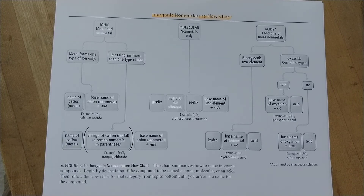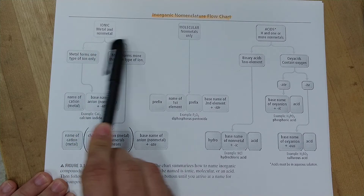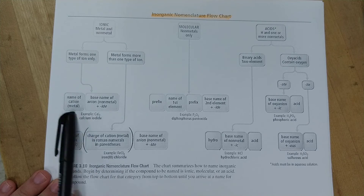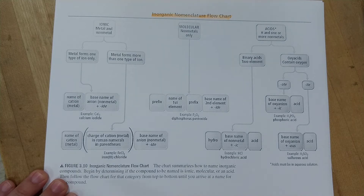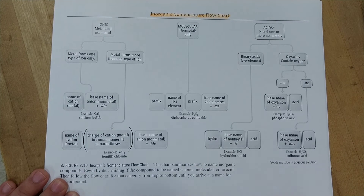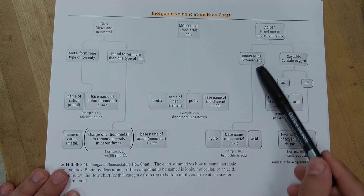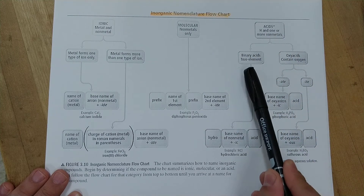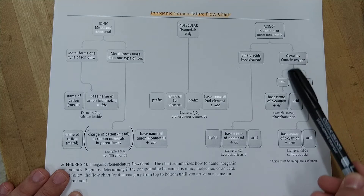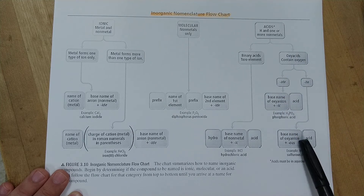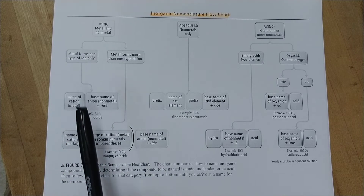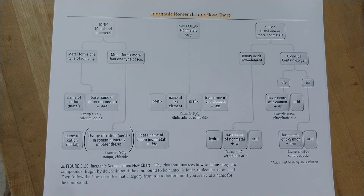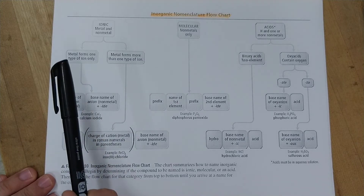There are basically this number of options for how to name things. If it's an ionic compound, you have two pathways to naming. If it's a molecular compound, there's just one way. If it's an acid, there are three ways: binary acid, oxy acid ending in -ate, or oxy acid ending in -ite. The best way to go through this is to show examples of each, working left to right.